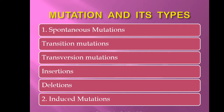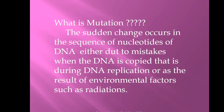There are different types of mutations. Basically there are two main types: one is spontaneous mutations and the second is induced mutations. Spontaneous mutations include transition mutations, transversion mutations, insertions, and deletions. In coming slides we will see about these different types of mutations one by one.